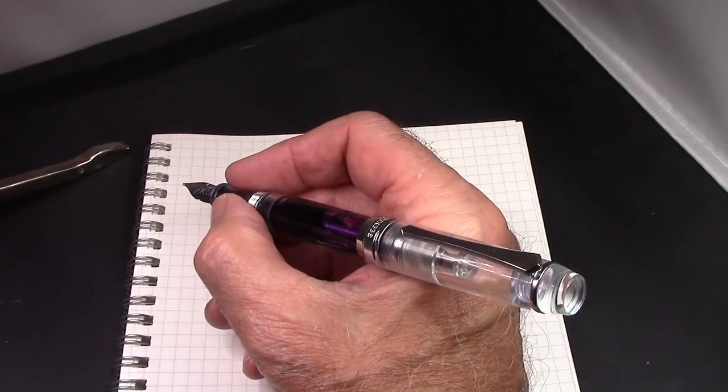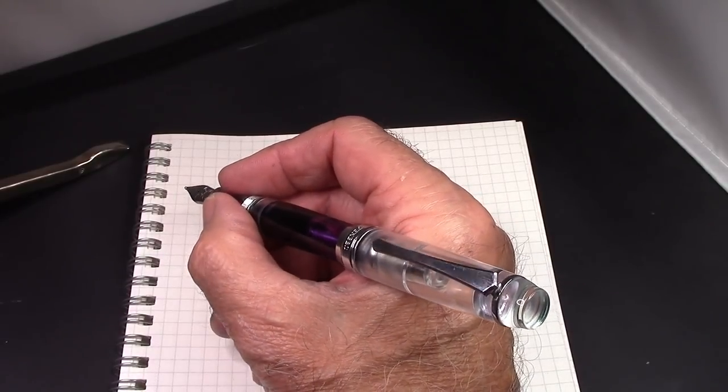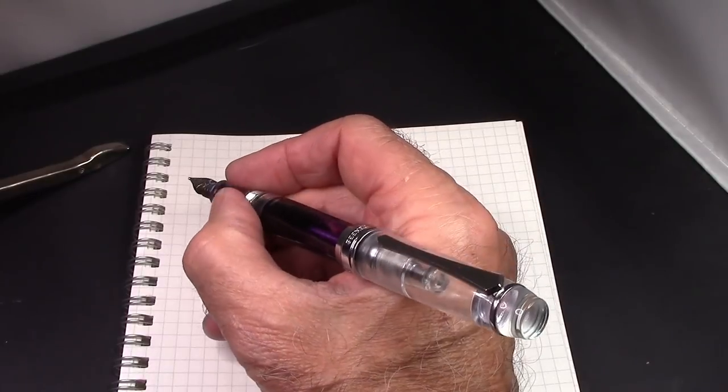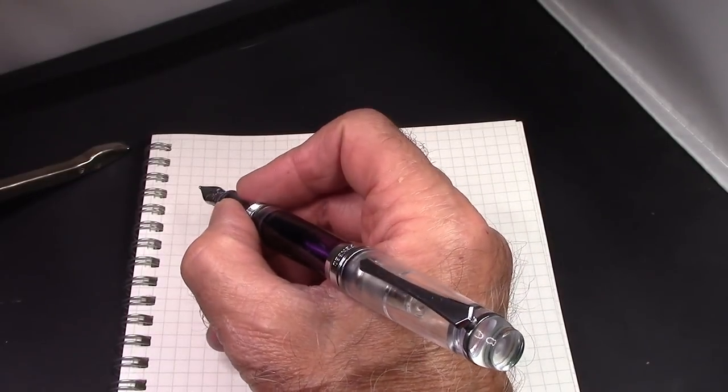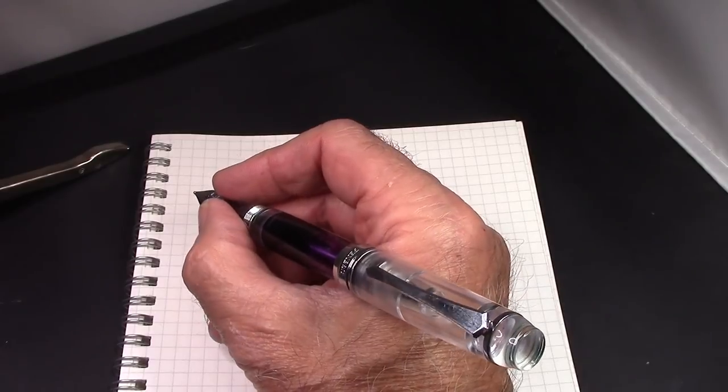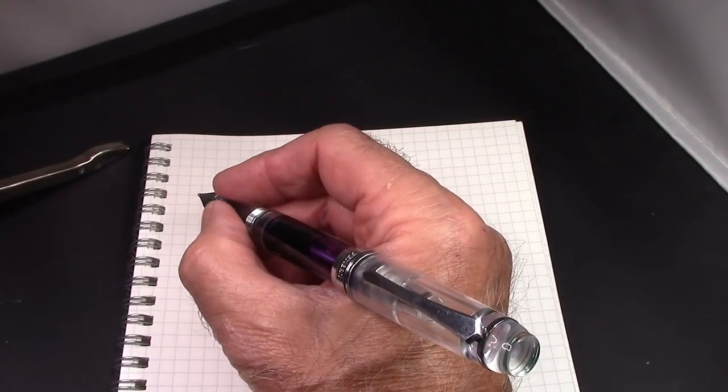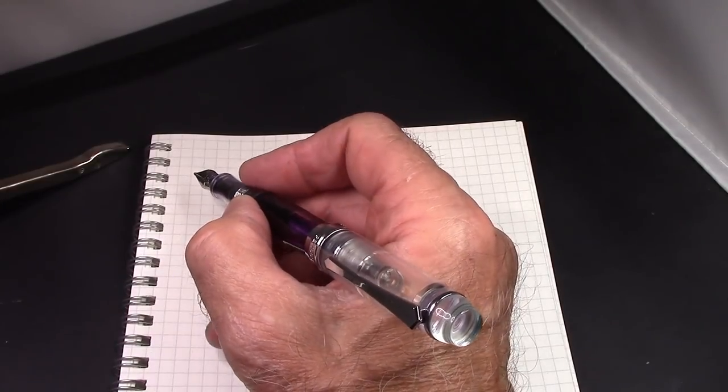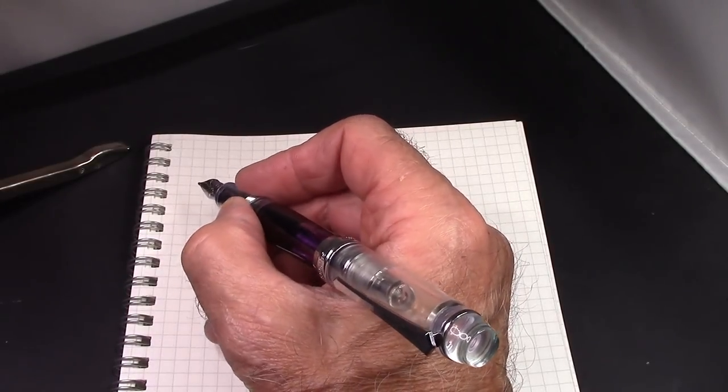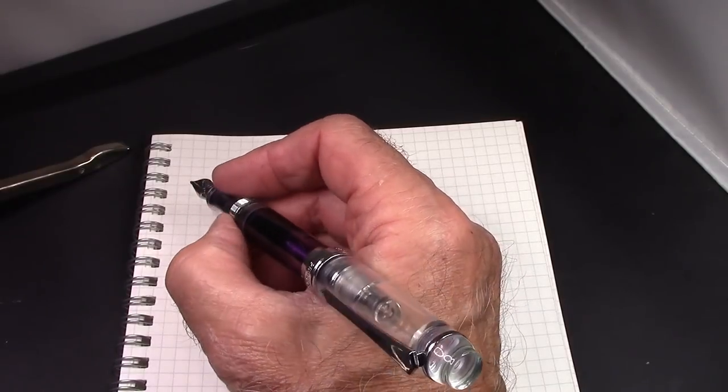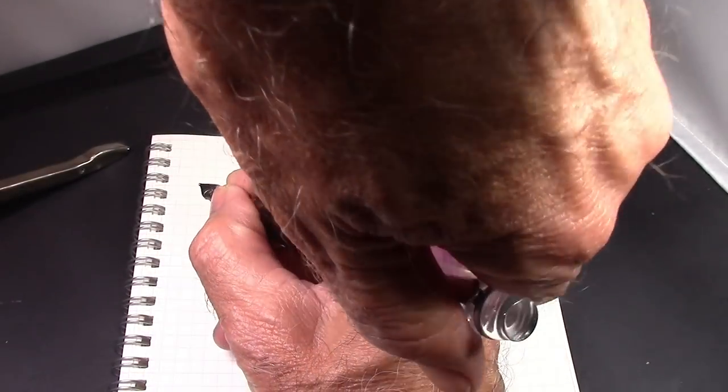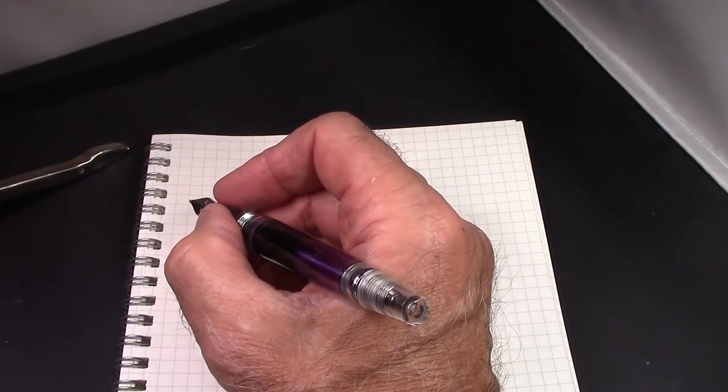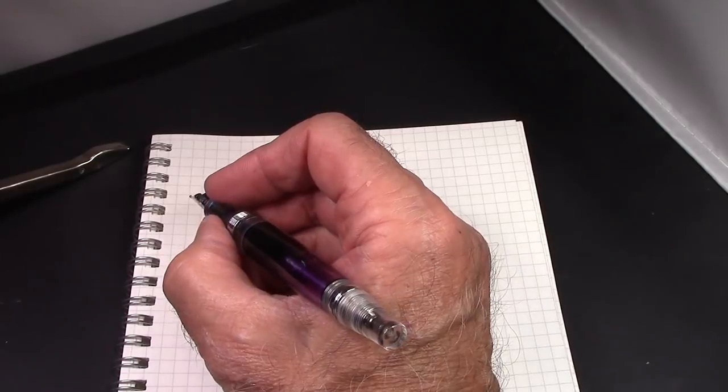In case you're one of the few out there that are not familiar with the 456, it fits great in a hand. I think ergonomically it's close to a perfect pen from my perspective. The section's the right size, you got enough room to move your fingers around, nice little flare out at the end. The threads, you know they're there but you don't really notice them. Even though they're metal, they're not sharp at all, so overall it works great.